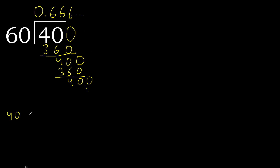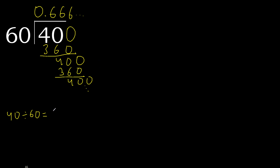Therefore 40 divided by 60 equals 0.6 repeat — or after the point, 6 repeat. Therefore repeat — equal.